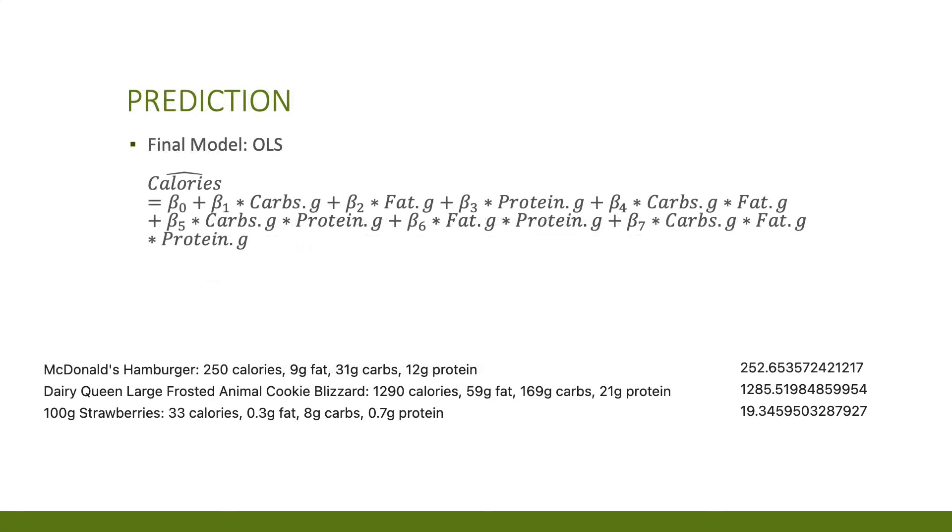As you can see, the final model relies on carbs, fat, protein, and their interactions to predict calories. I identified three common food items: a McDonald's hamburger, a Dairy Queen large frosted animal cookie blizzard, and 100 grams of strawberries to see how the model performed. As we can see on the right, these predictions that the model concluded seem quite close to the true caloric amounts.